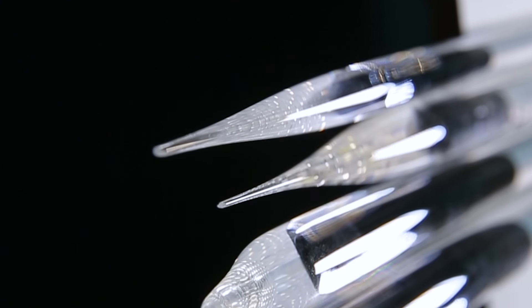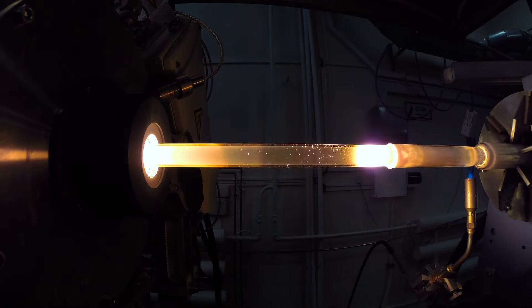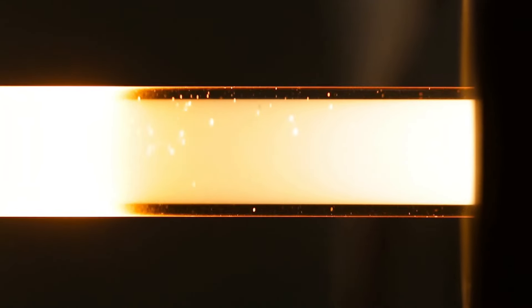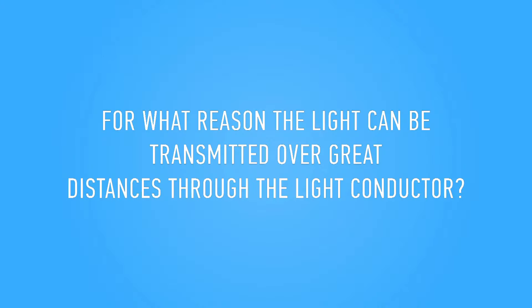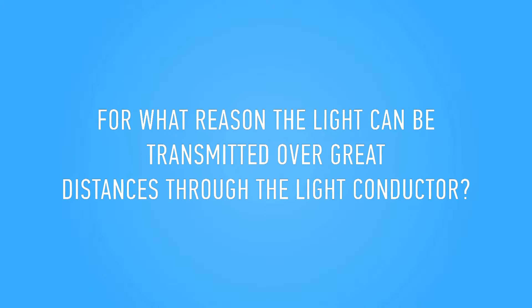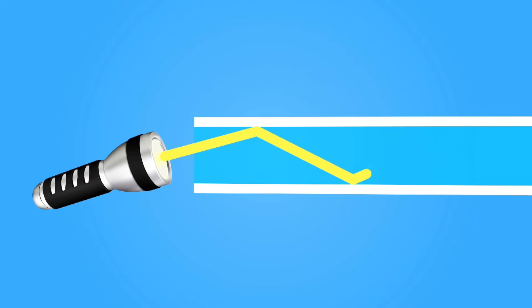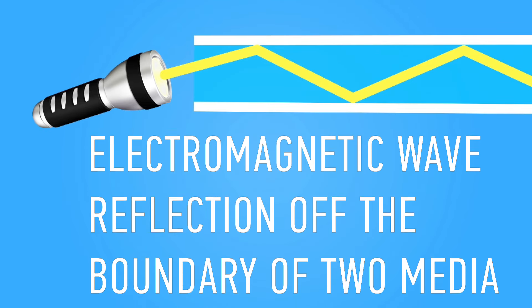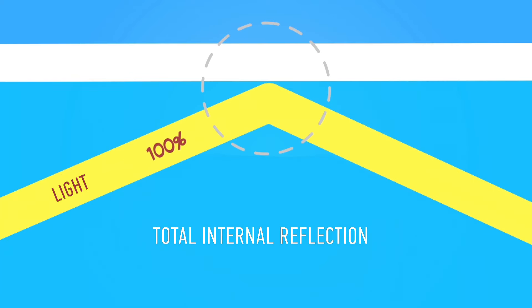The ultra-pure glass is inside, and the one with a higher refractory index is outside. How can light be transmitted over great distances through a light conductor? This happens thanks to a process called total internal reflection. If we shine a light on a glass cylinder at a certain angle, it will reflect off the side. In science, this is called total internal reflection, when electromagnetic waves reflect off the boundary of two mediums.